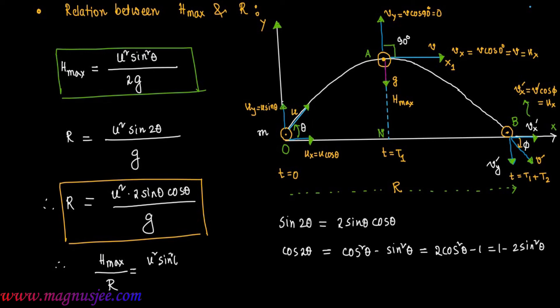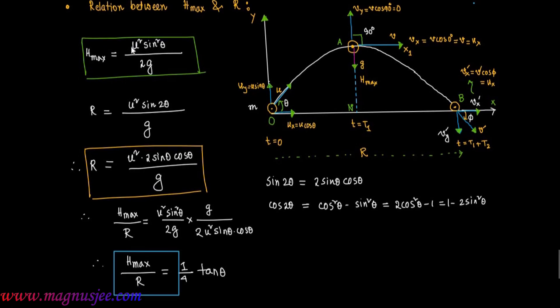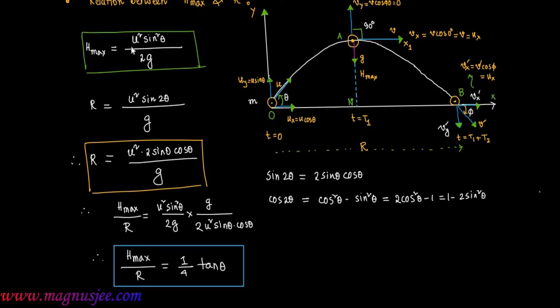Now, H max / R = (U² sin²θ / 2g) × (g / 2U² sinθ cosθ). Simplifying, we get H max / R = (1/4) tanθ. So this is the relation between maximum height H max and horizontal range R of a projectile thrown from the ground: H max / R = (1/4) tanθ.